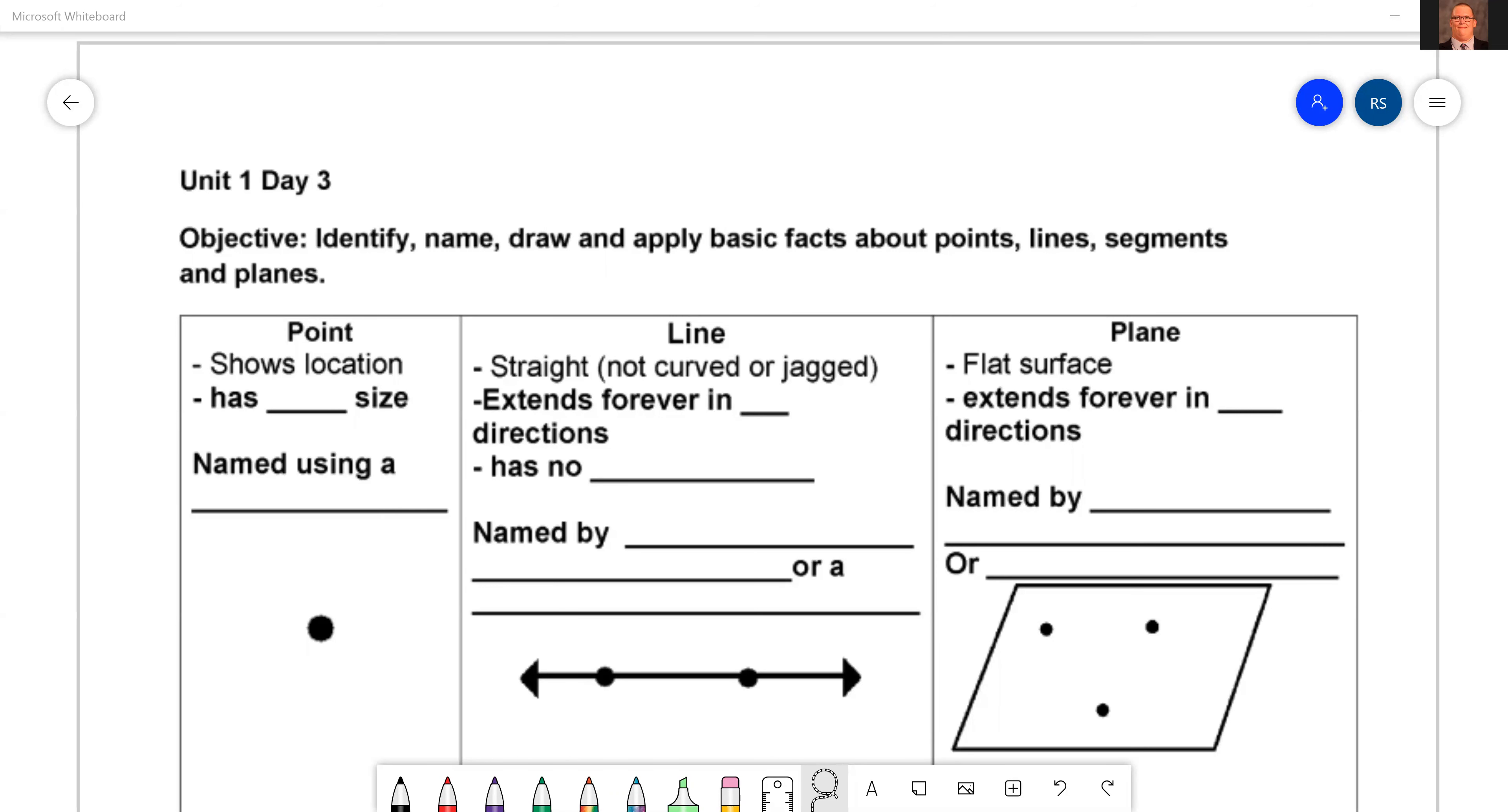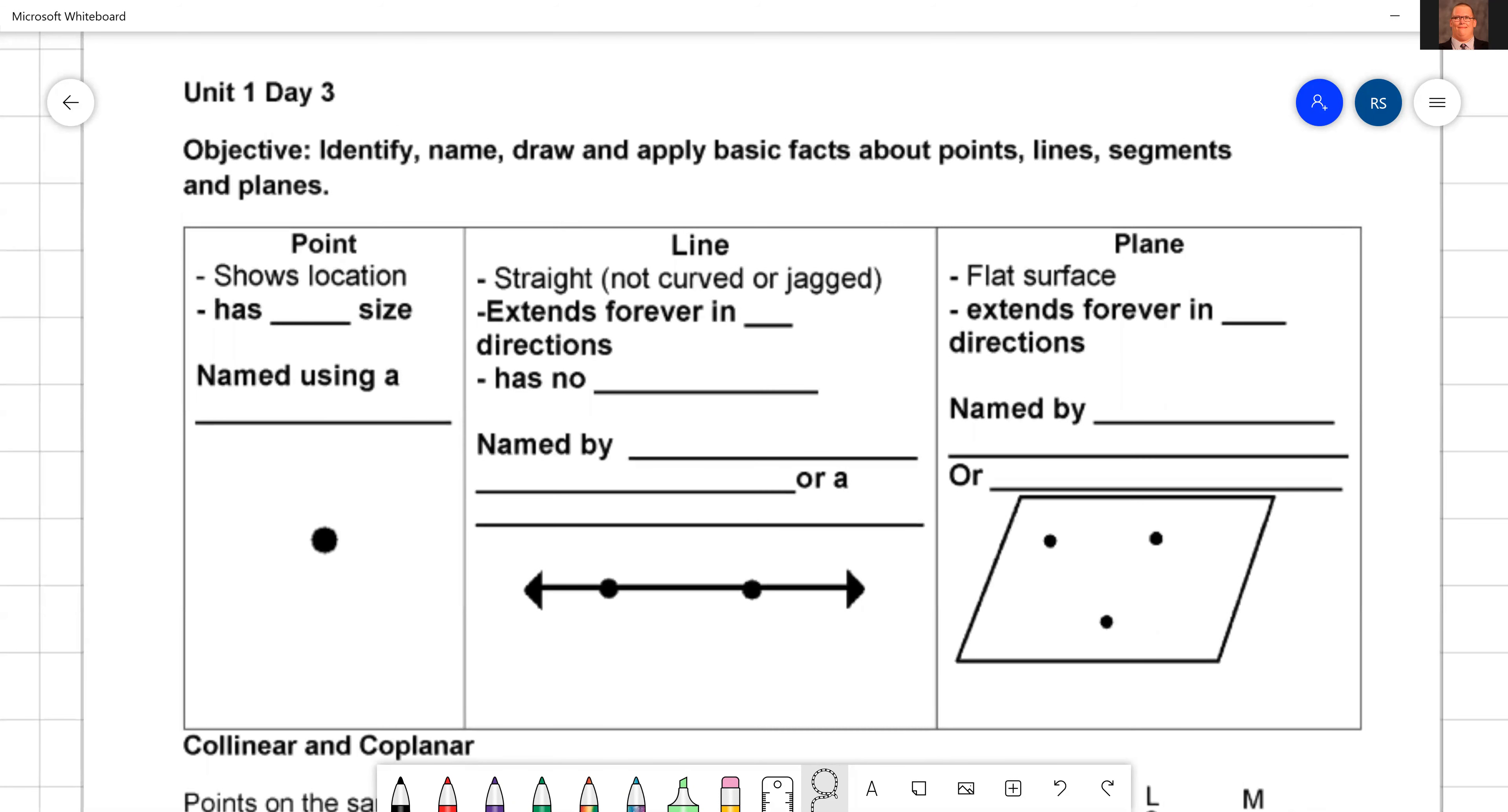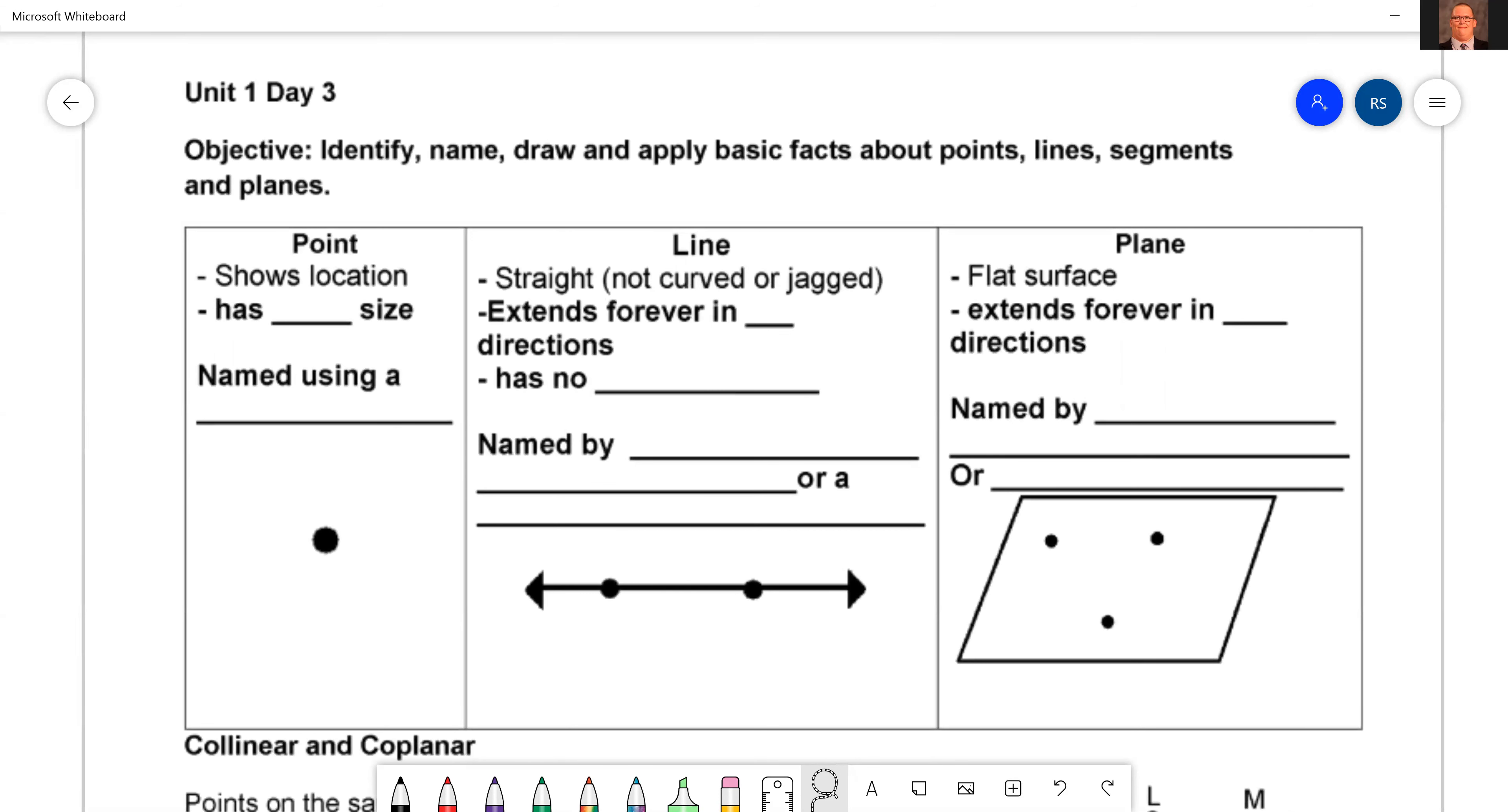The first three things we're going to look at are how to identify points, lines, and planes. And kind of contrary to what you think, these three terms, even though you can define them and know what they are, they're still all three called undefined terms. Why? Honestly I have no clue, I would have to look it up, but they're all three called undefined terms.